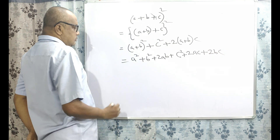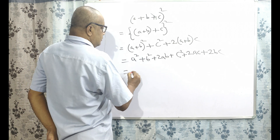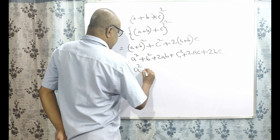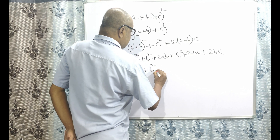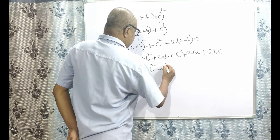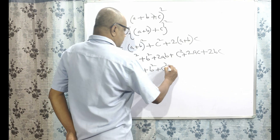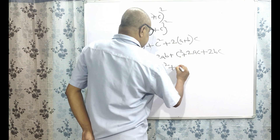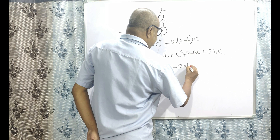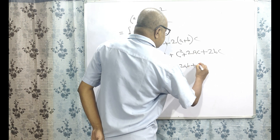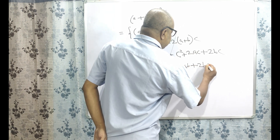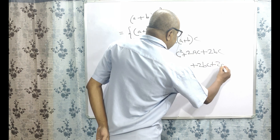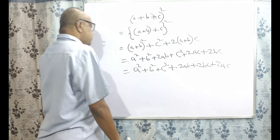Rearranging, this is equal to A square plus B square plus C square plus twice AB plus twice BC plus twice AC. This completes the derivation of the first formula.